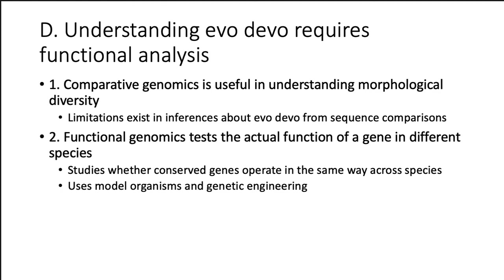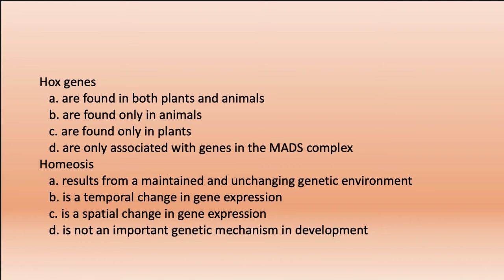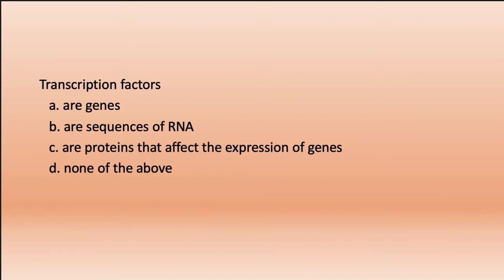Review questions for section one. Heterochrony is a change in the relative timing of developmental events — answer C. Vast phenotypic differences between organisms as different as fruit flies and humans result from the manipulation of timing and regulation of expression of probably fewer than 100 highly conserved genes — answer B — because we do share many genes with fruit flies. Hox genes are found in both plants and animals — answer A. Homeosis is a spatial change in gene expression — answer C. Transcription factors are proteins that affect the expression of genes — answer C.